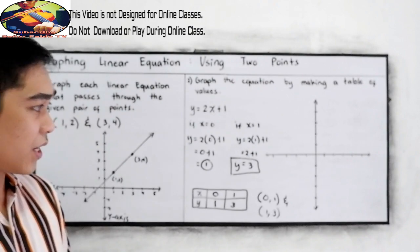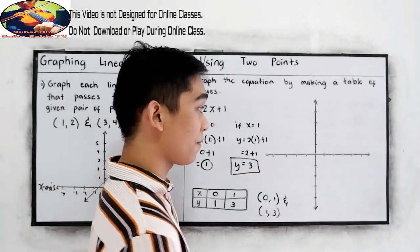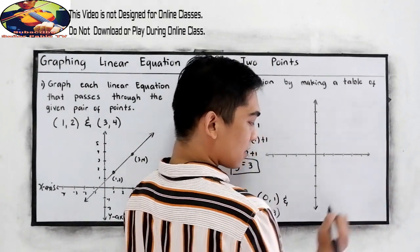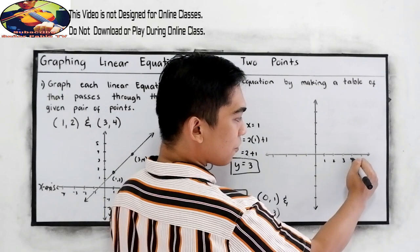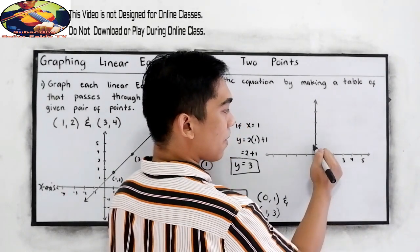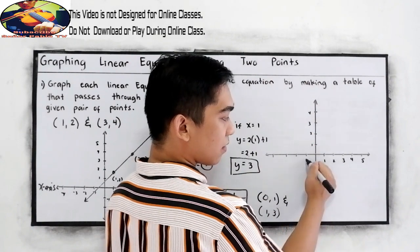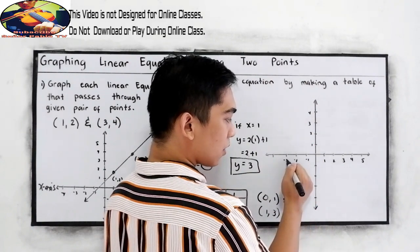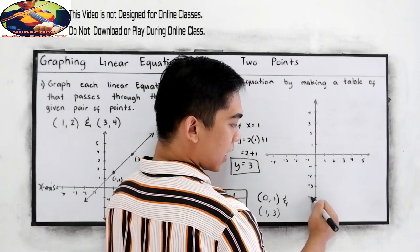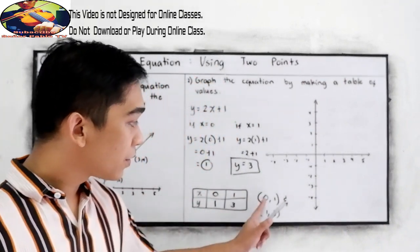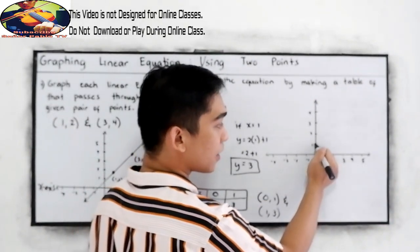And we are now ready to plot in our rectangular coordinate system. This is the x-axis, the y-axis. So positive 1, 2, 3, 4, 5. Positive 1, 2, 3, 4. Negative 1, negative 2, negative 3, negative 4. Negative 1, negative 2, negative 3, negative 4. So 0, 1, so 0, then 1.